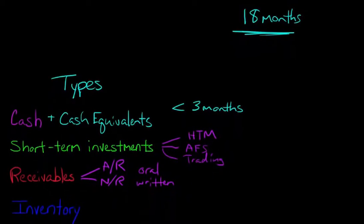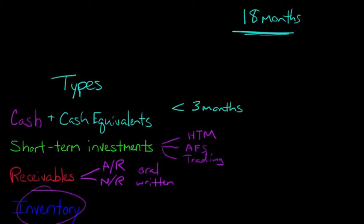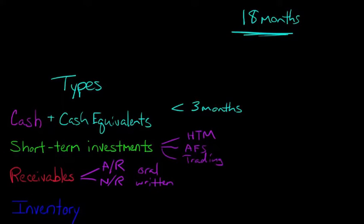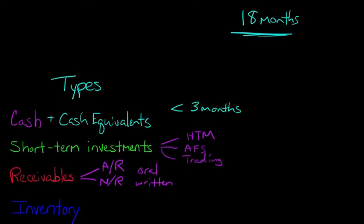So that's going to be classified as a current asset. And then of course inventory. We would expect that we're going to be selling our inventory within one year or the length of our operating cycle. And if we don't expect to sell our inventory during that time, then we need to take a write-down anyway. So when you see inventory, it's going to be a current asset.